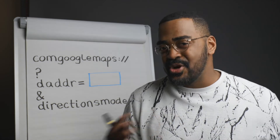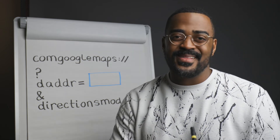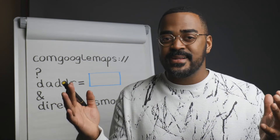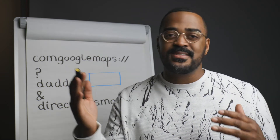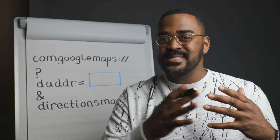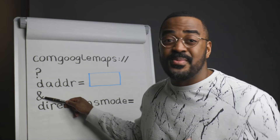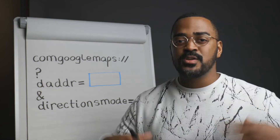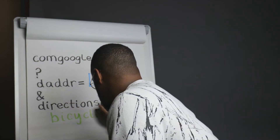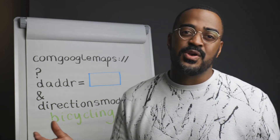Now we need to do this nerdy thing with the voice input called URL encoding, but the Shortcuts app handles that for us. Basically that means it takes our destination address — which might have spaces and special characters — and translates it into something we can type into a web URL. The next piece is an ampersand, which tells Google we have more to say. Here's where we give it our directions mode, which in our case is bicycling. Since this won't change in the context of our app, we can hard-code it into the URL.